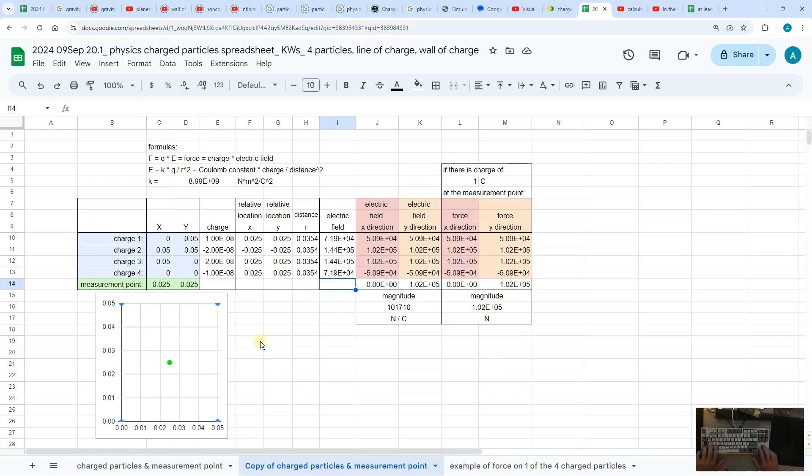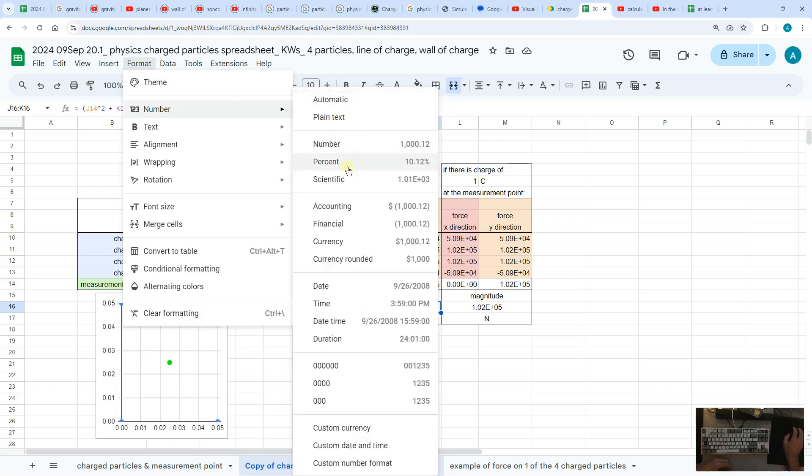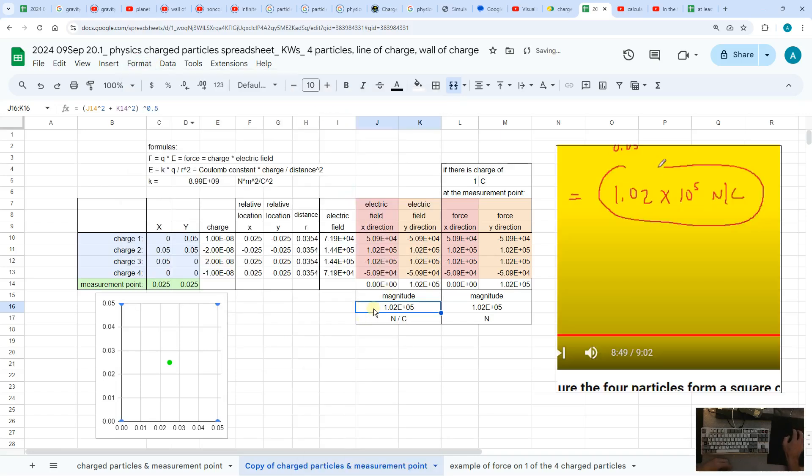The distance is calculated, the electric field is calculated. And the magnitude of the electric field is this number. Let's change that to scientific notation. And so the answer is 1.02 times 10 to the 5 newtons divided by coulombs.